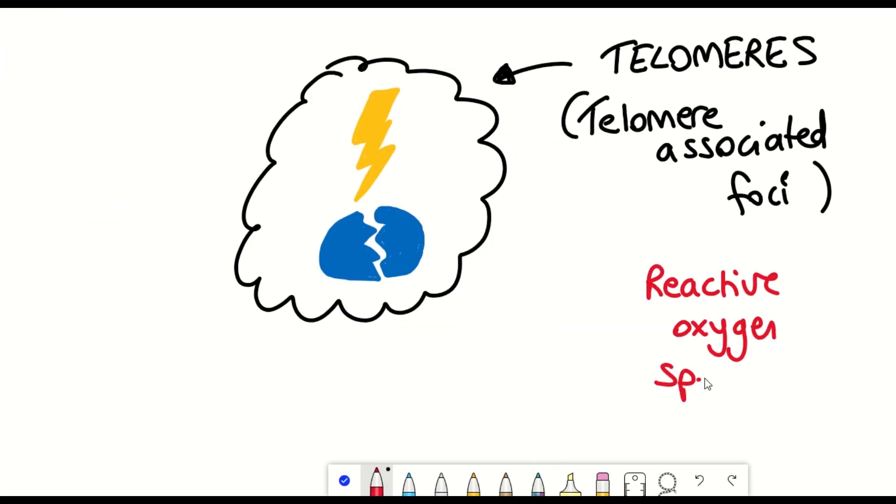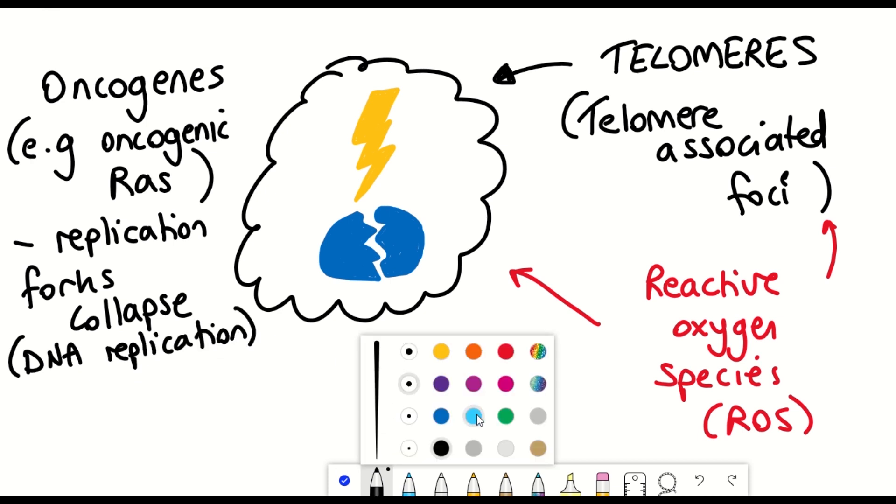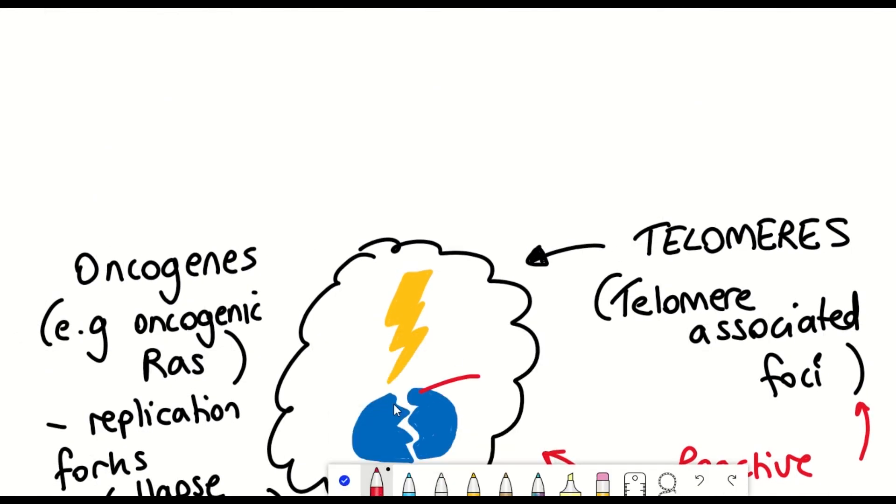One of the ways that this damage can occur is through the accumulation of reactive oxygen species within a cell, which not only cause damage to telomeres, but can also cause proteomic damage. In addition, enhanced proliferation from oncogenic-induced senescence can cause damage to DNA due to collapse of replication forks during DNA replication.